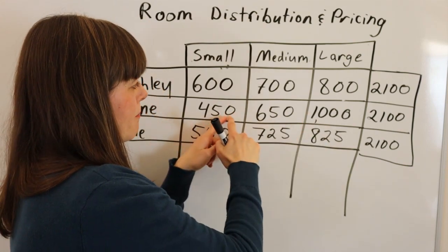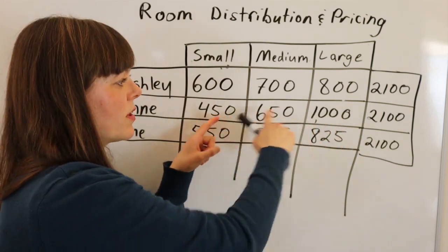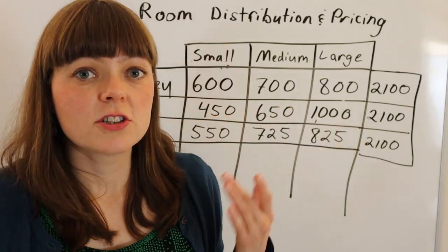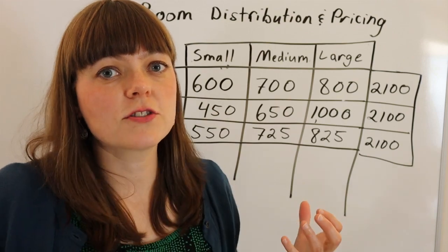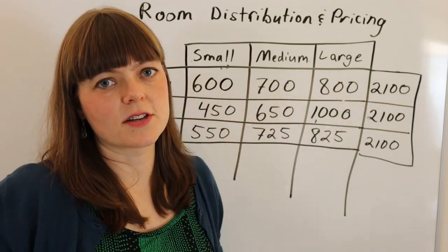For Anne, the bump up from the small room to the large room is a huge bump up for her, so she's willing to pay a lot more for the large room. So that is reflected. Our values for the different rooms are reflected in our bids and our bids have to add up to $2,100.